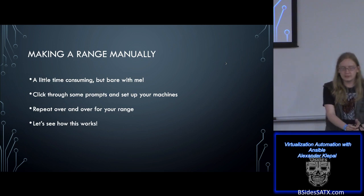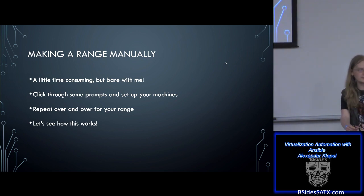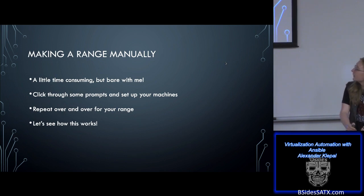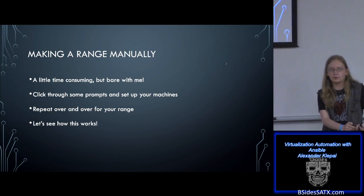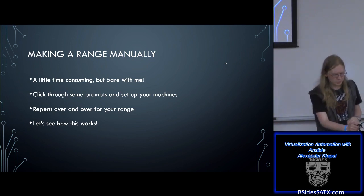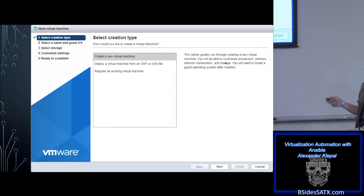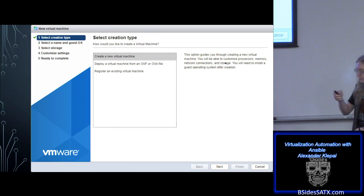Making a virtual range manually can be time-consuming and painful — it's done that to me. You click through some prompts, make your virtual machine, and repeat it over and over until you have the range you want. So let's see how we go about making one virtual machine. First things first, you click on the Create New Virtual Machine button — it's big, bold, and beautiful, which is why I didn't highlight it in the slide.